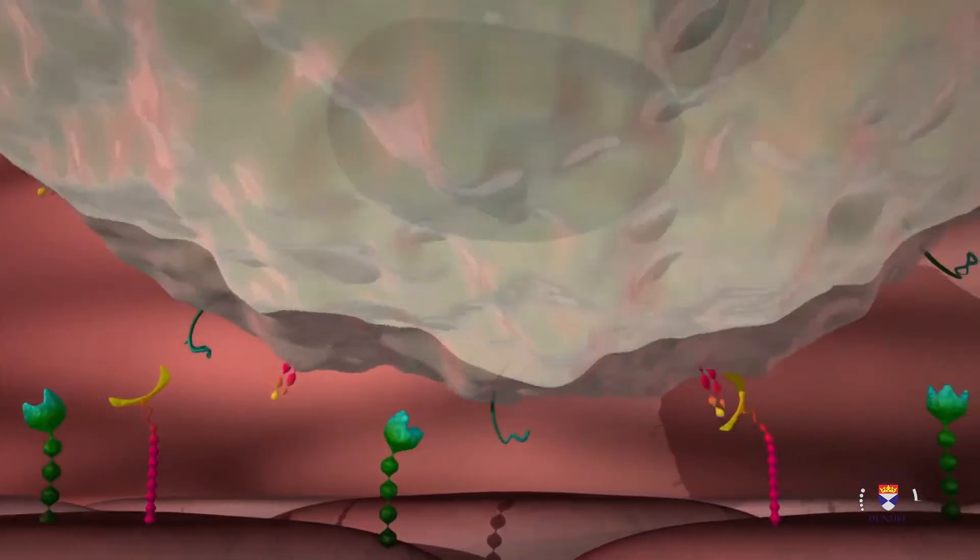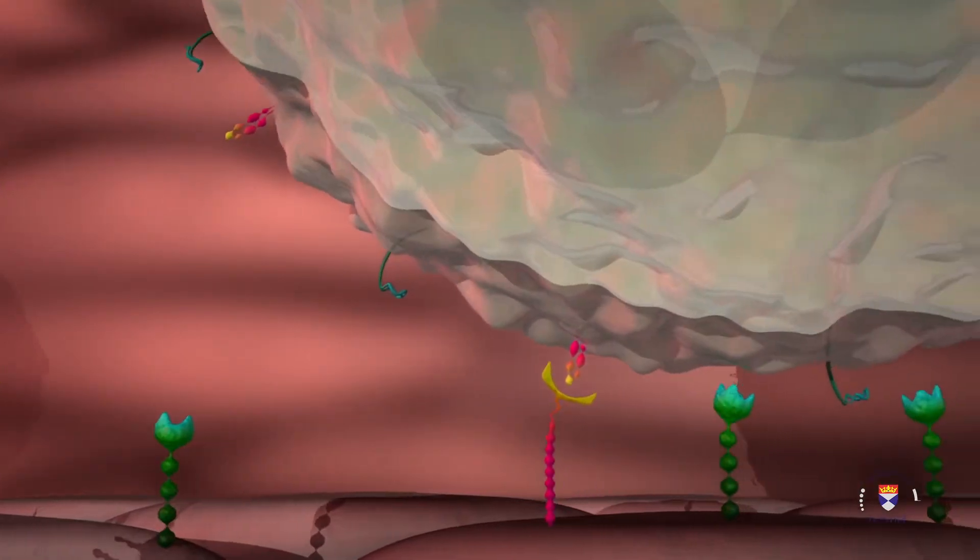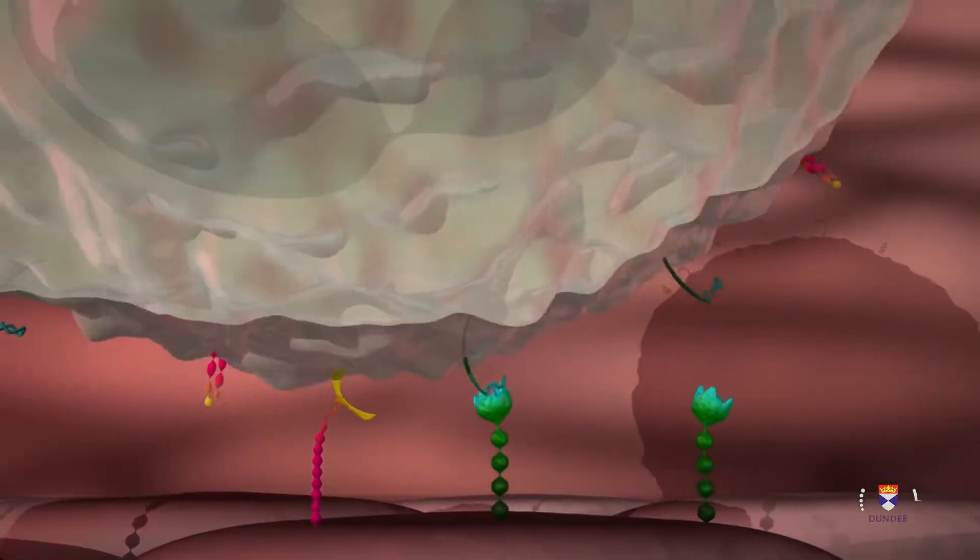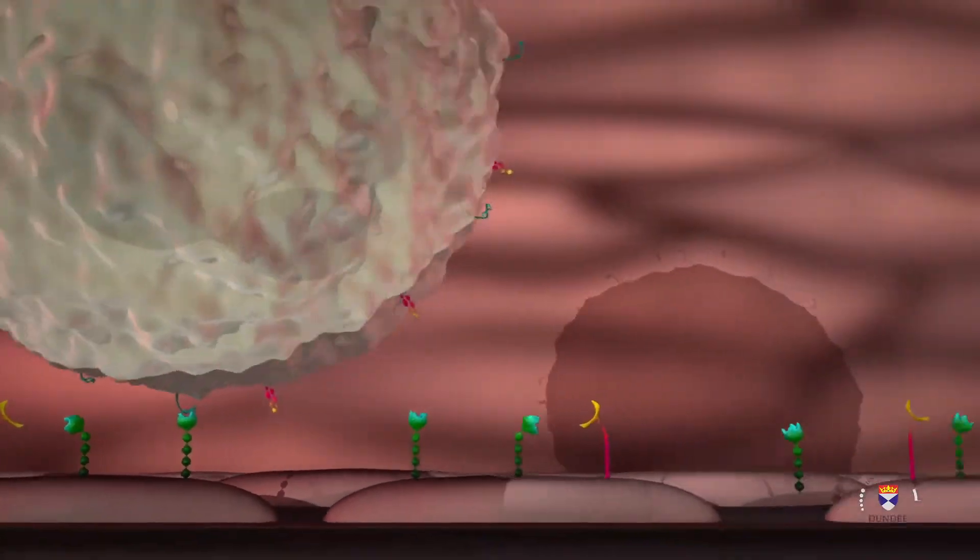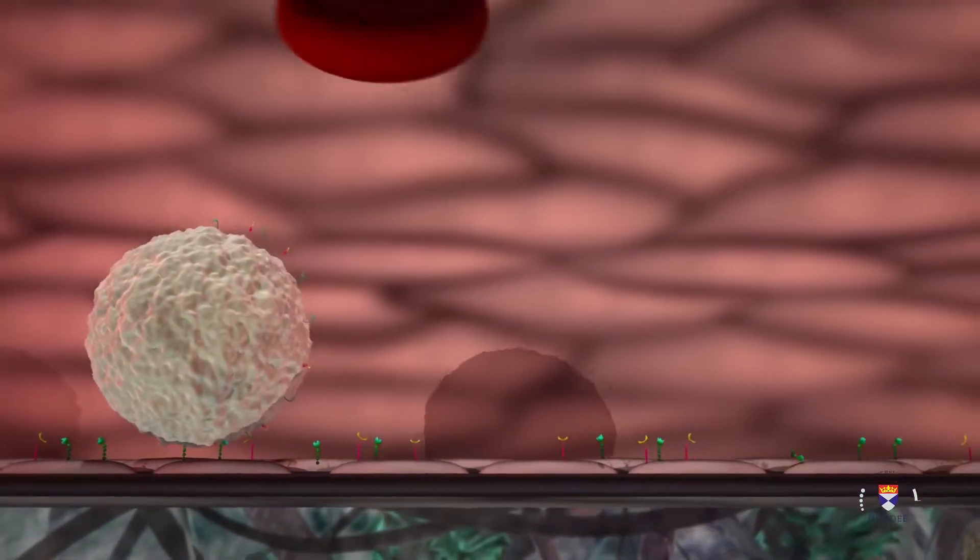This binding is weak and the connections between the leukocytes and vessel walls frequently break and reform. This results in leukocytes slowly rolling along the vessel walls.